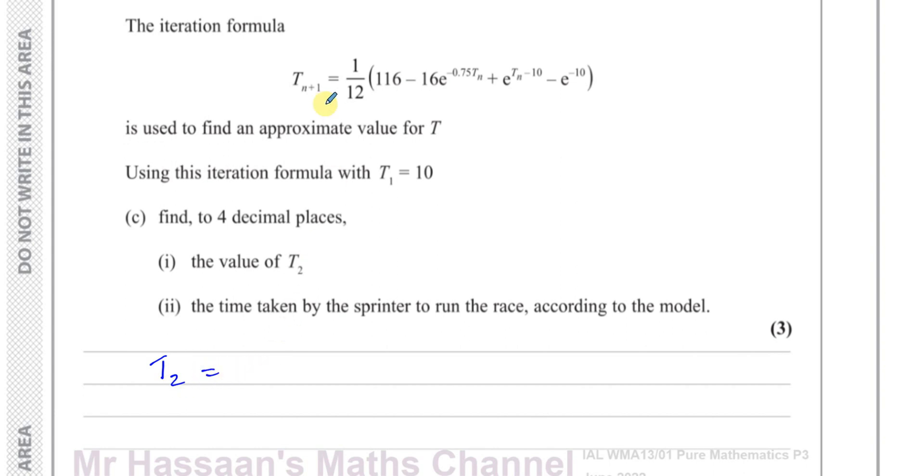So the first thing we've got to do is we've got to find T_2. Basically to find T_2, you take the iteration formula and you substitute instead of T_n, the value of T_1, which is 10. So I'm going to put instead of T_n, 10. So I'll have 116 minus 16e^{-0.75 times 10} plus e^{10} minus 10 minus e^{-10}. So I've replaced this with 10 in my formula in those two places.